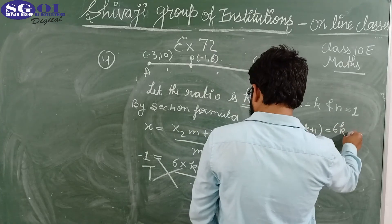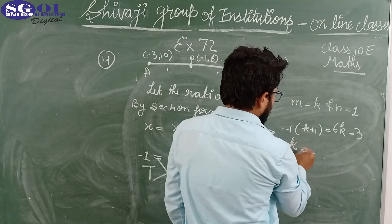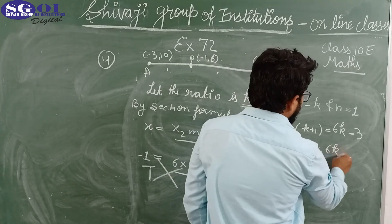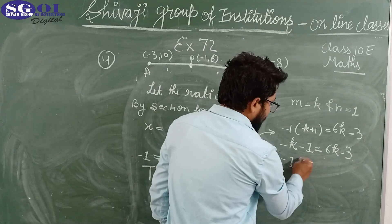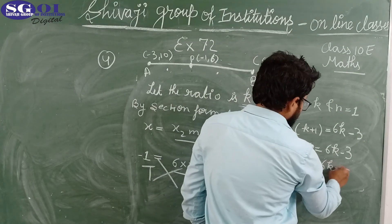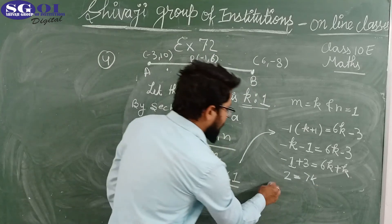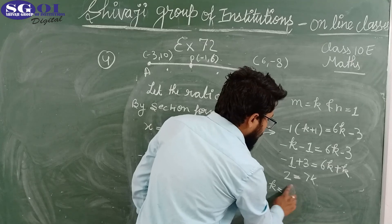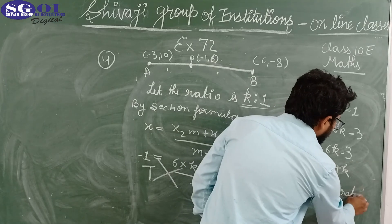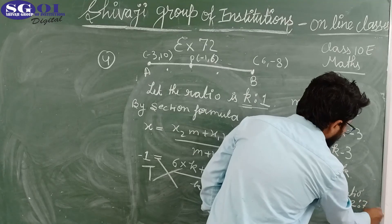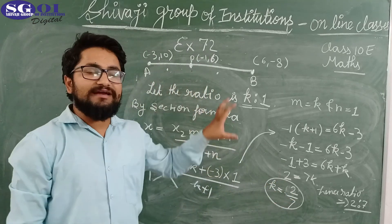Moving k to one side and -3 to the other: -1 + 3 = 6k + k, so 2 = 7k. Therefore k equals 2/7. Hence the ratio is 2:7. Since the ratio is positive, the section is internal.